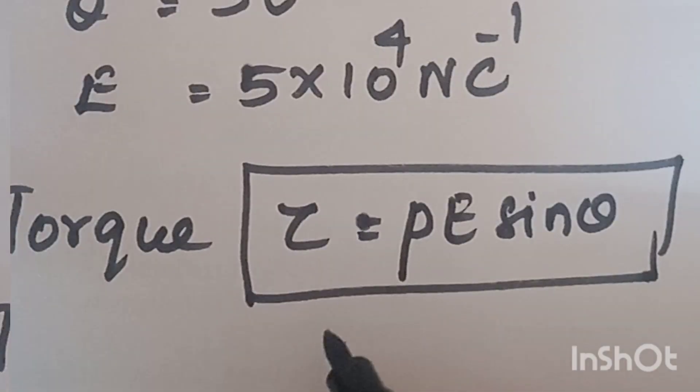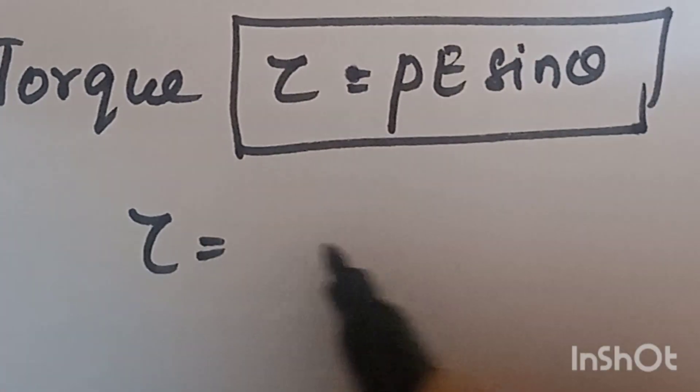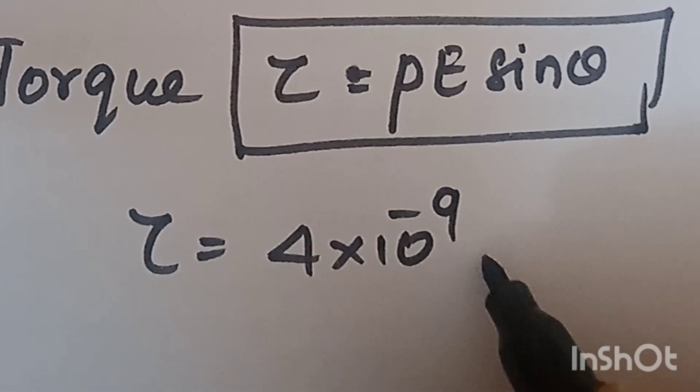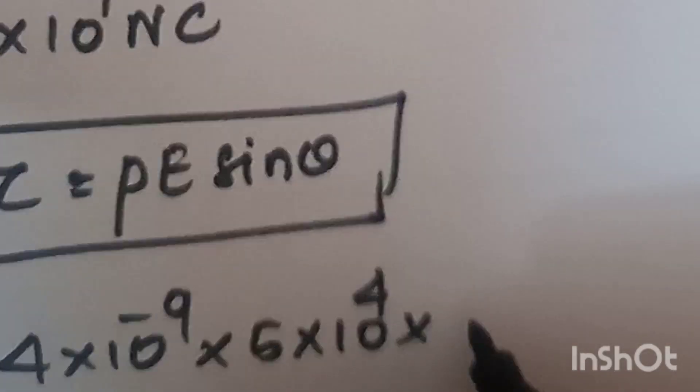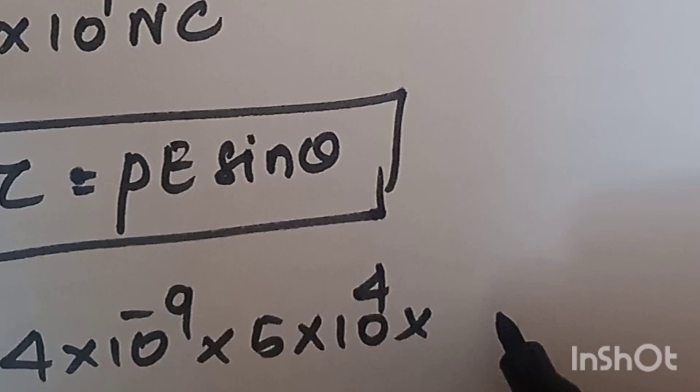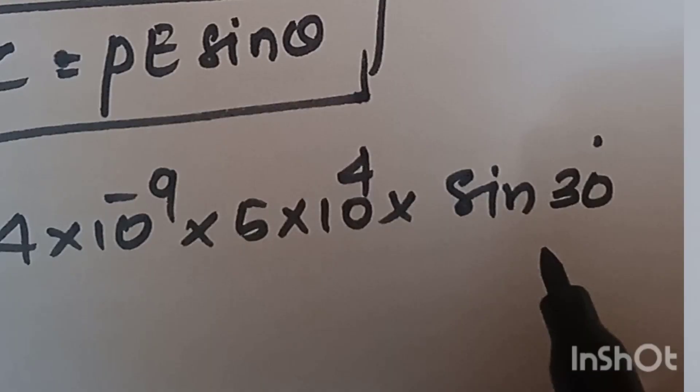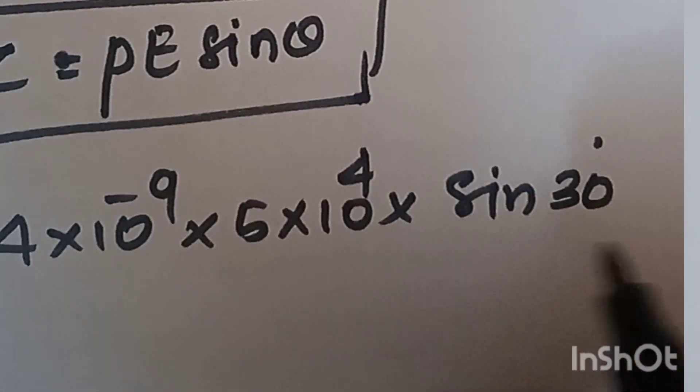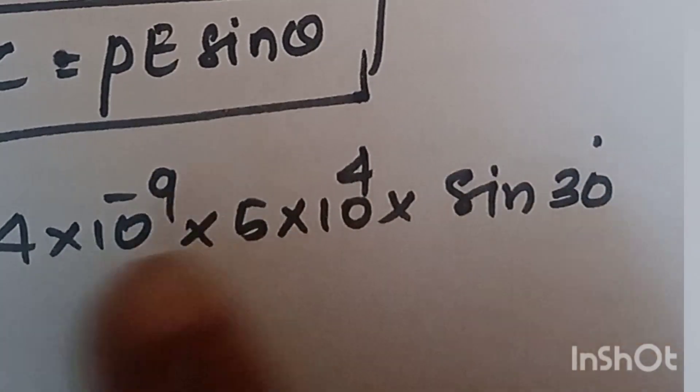Substituting, P is 4 × 10^-9, E is 5 × 10^4 newton per coulomb. Sin 30 degrees is 1/2, so the 1/2 cancels with 2.